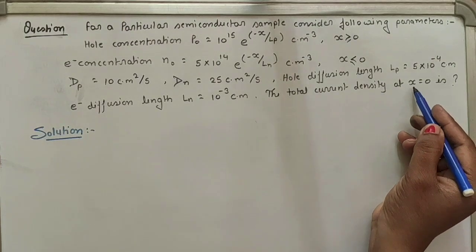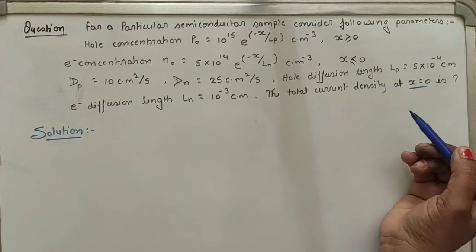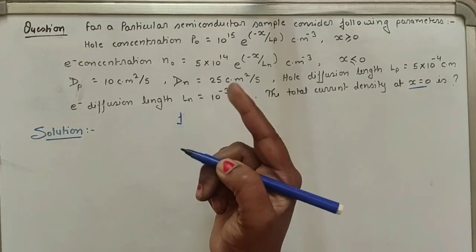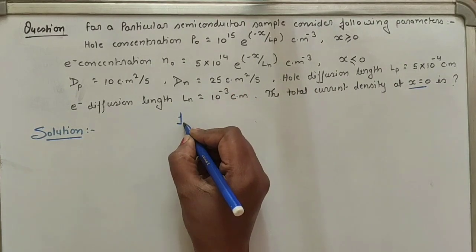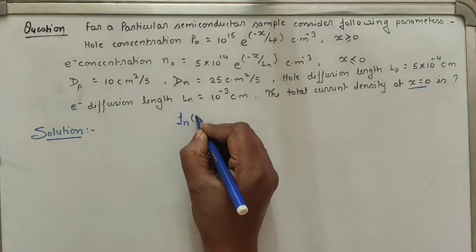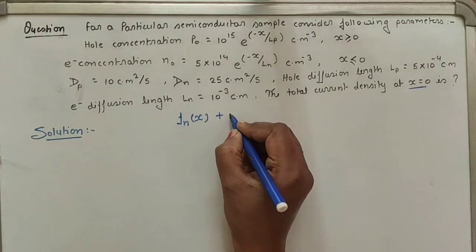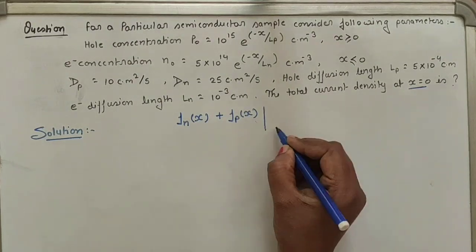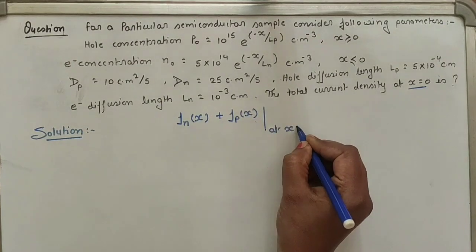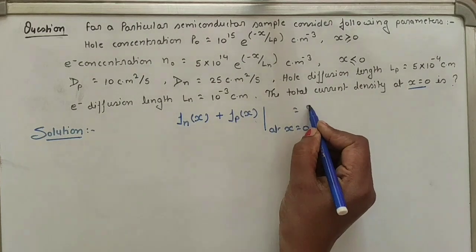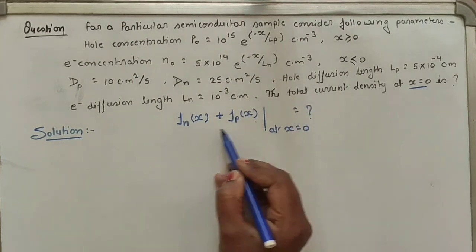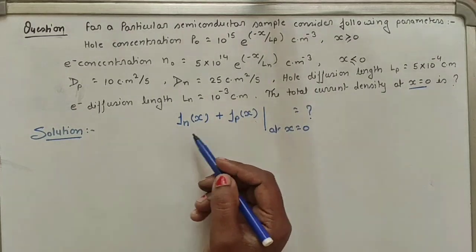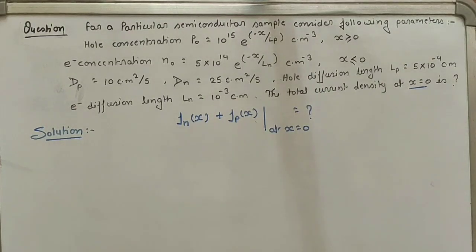The question asks for total current density at x is equal to 0. Total current density means electron current density plus hole current density, evaluated at x = 0.